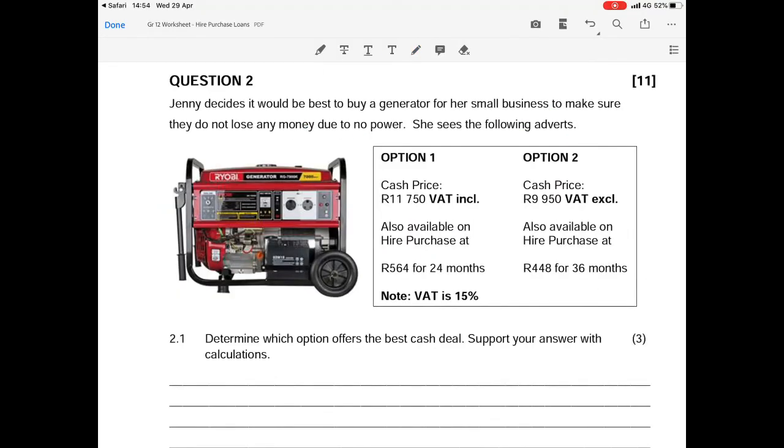In question 2 we've got Jenny who wants to buy a generator for her business because of load shedding and there are two options. She can buy for R11,750 VAT inclusive or on hire purchase for R564 over 24 months. Option 2 is that you can pay R9,950 VAT exclusive or on hire purchase at R448 for 36 months.